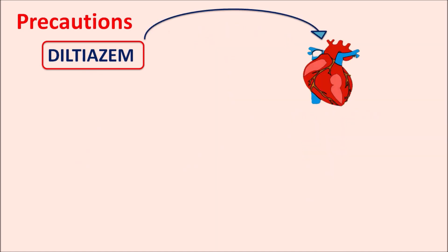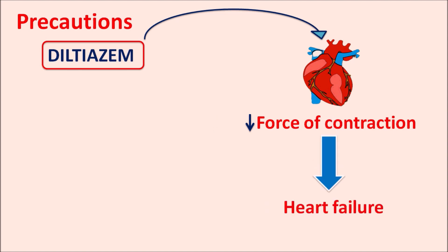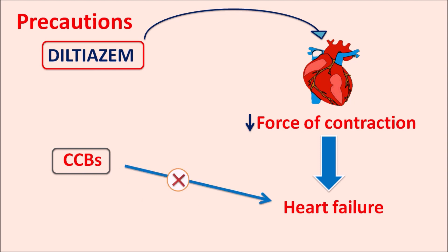Another effect of Diltiazem on the heart is that it can reduce the force of contraction, thereby increasing the risk of heart failure. That is why all calcium channel blockers — verapamil, Diltiazem, and dihydropyridines — are contraindicated in heart failure, because they reduce the force of contraction, which further deteriorates the symptoms of heart failure.